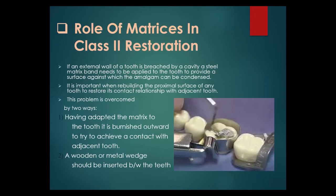Role of the matrix in Class II restoration. If an external wall of a tooth is breached by a cavity, a steel matrix band needs to be applied to the tooth to provide a surface against which the amalgam can be condensed. It is important when rebuilding the proximal surface to restore its contact relationship with the adjacent tooth. This is overcome in two ways: the matrix is burnished outward to achieve contact with the adjacent tooth, or a wooden or metal wedge is inserted between the teeth.